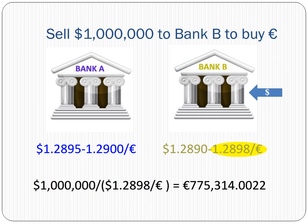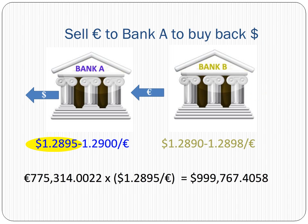If we first approach Bank B with a million dollars, Bank B will sell us euros at the ask price and we receive 775,314.00 euros. We then sell this euro amount to Bank A at the bid rate and receive 999,767.41 dollars. Again, there is no arbitrage profit.